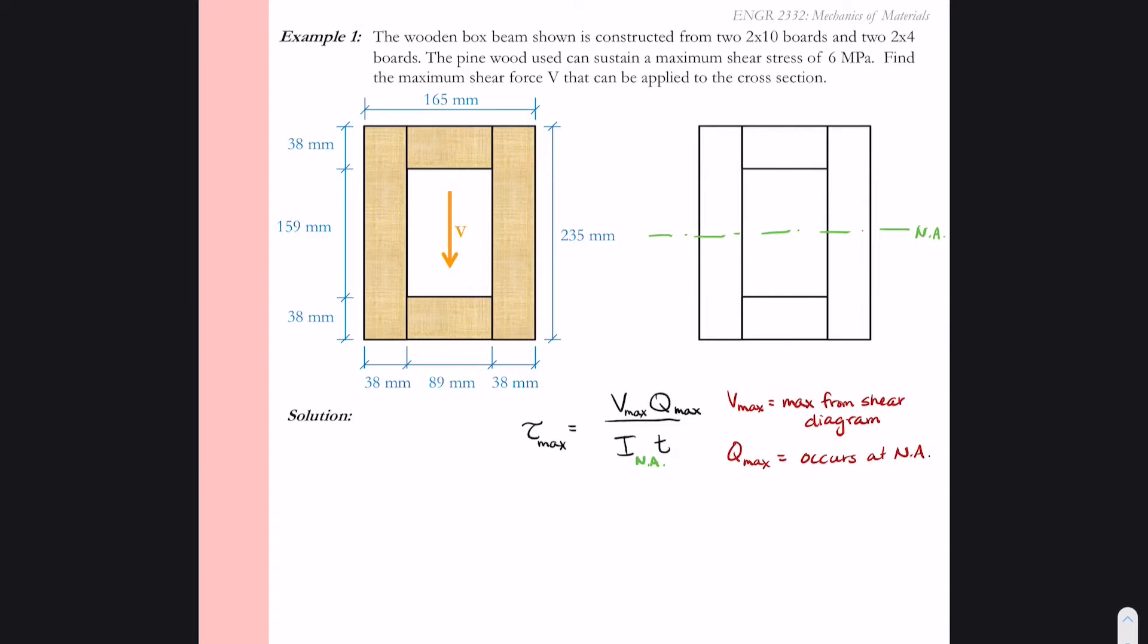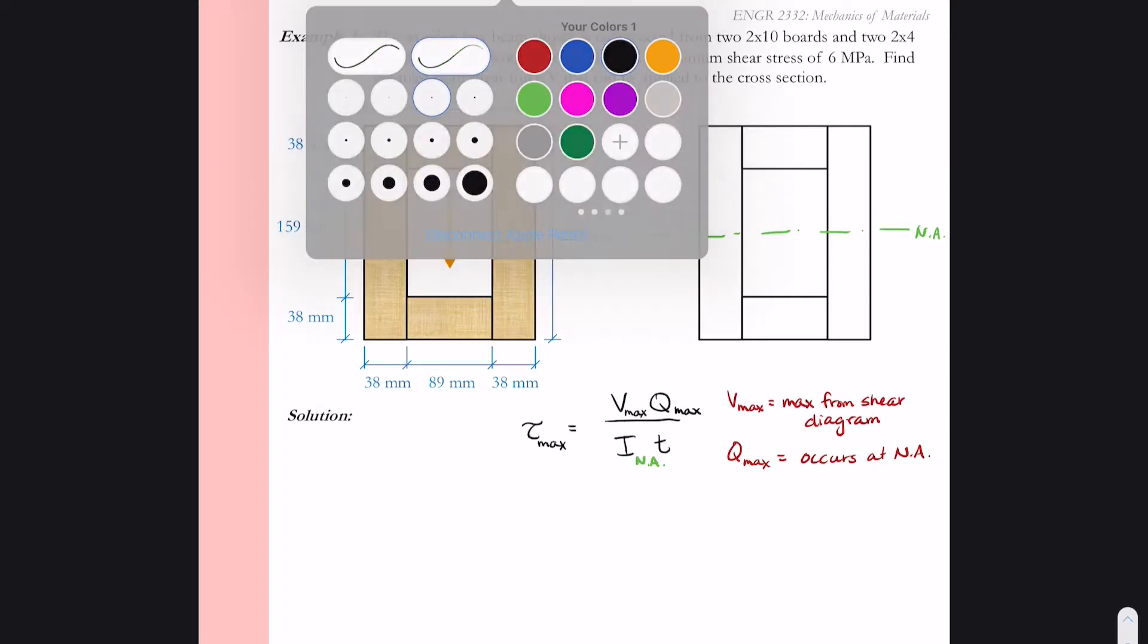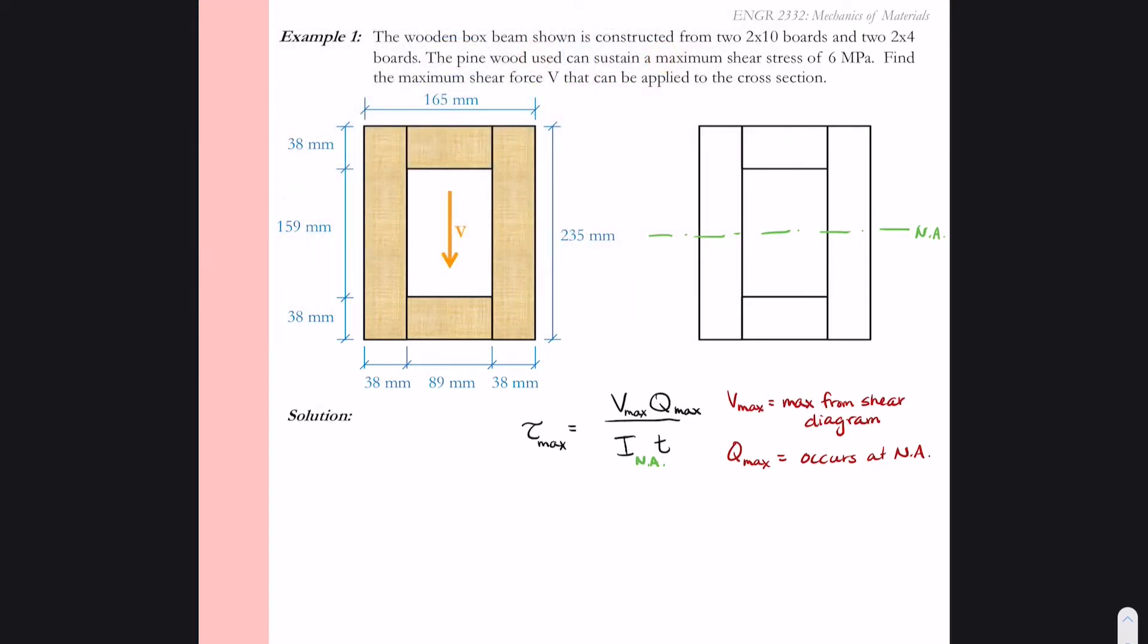For the denominator, I is always the moment of inertia about the neutral axis and I is for the total shape. So I is a cross-sectional property for this box beam, so there's really no changing I. I remains one value. T is the total thickness at our point of interest, so that'll be at the neutral axis in this particular problem.